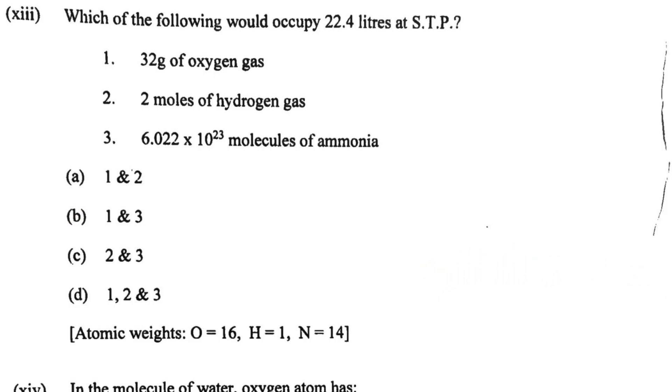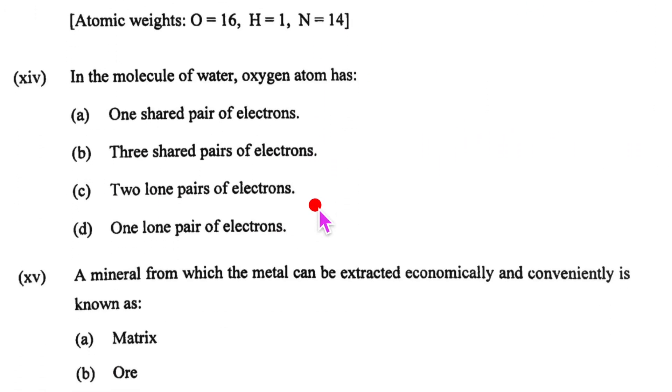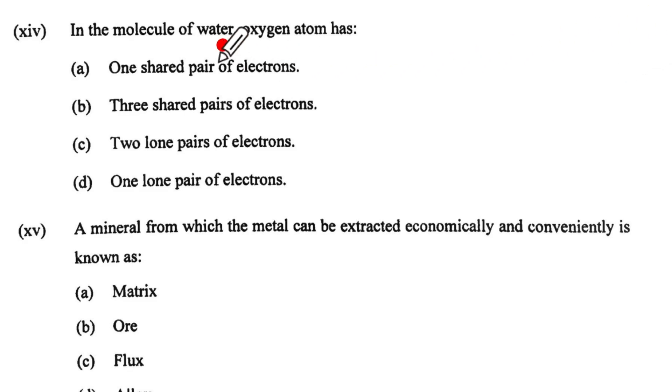Let us look at fourteenth one. In the molecule of water oxygen atom has. Now oxygen atom has 1, 2, 3, 4, 5, 6 and this is going to be this electron is going to be shared with H. So it will have two lone pairs. What is the option here? 3. So two lone pairs is what oxygen will have.